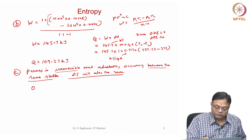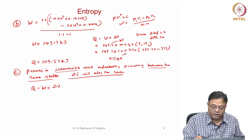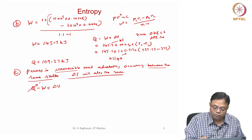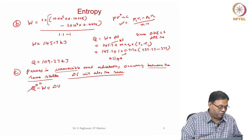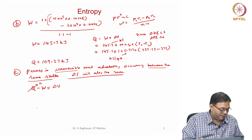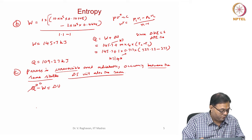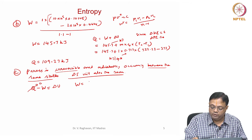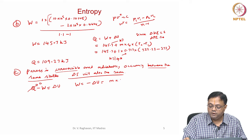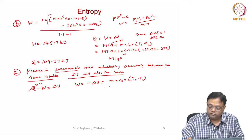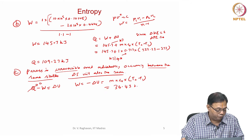First law: Q minus W equals delta U. Here Q is 0 since the process is adiabatic, so W equals minus delta U equals M·Cv·(T2−T1). The end states are known, so this comes out to be 36.43 kilojoules.